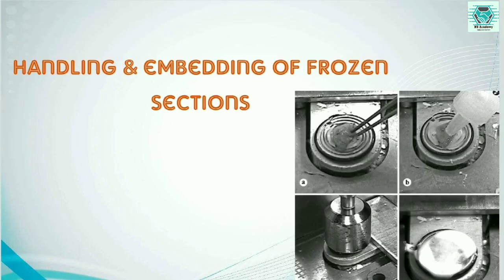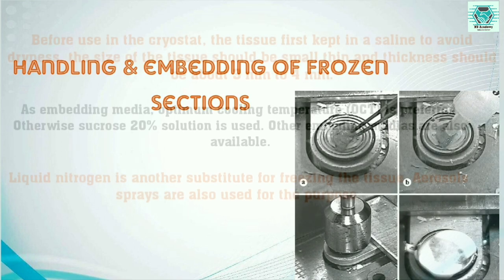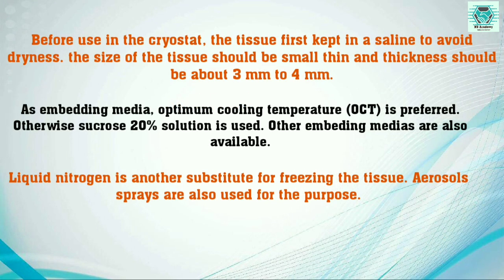Before using the cryostat, the specimen should be handled properly. The tissue must reach the histopathology lab immediately to avoid drying; it should be kept in saline. The size of the tissue should be small and thin so that good smooth sections can be obtained and freezing is also quick. The thickness of the tissue should be about 3 mm to 4 mm.